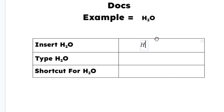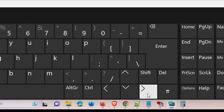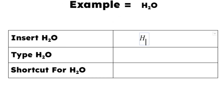Now type H. To put the 2 in subscript, go to the keyboard and press the forward arrow key (right arrow key), then type 2. To return to normal pointer position, press the forward arrow key once again, then type O. Now it is H₂O.